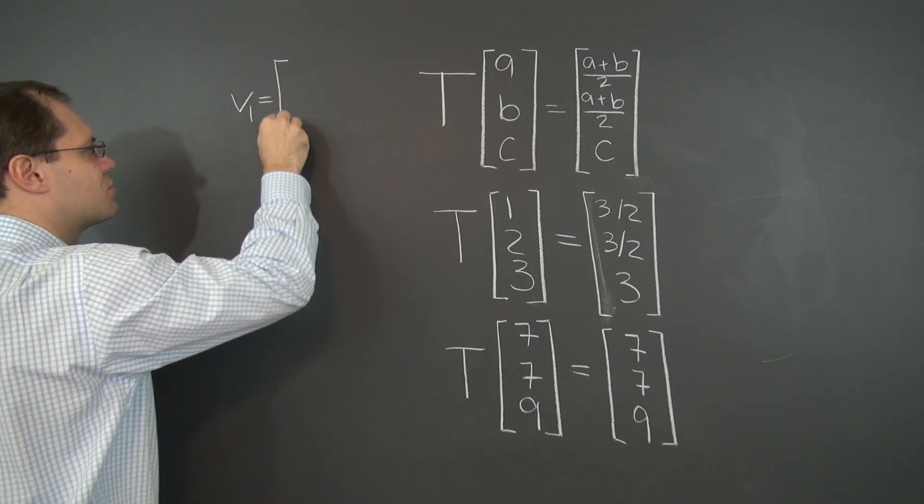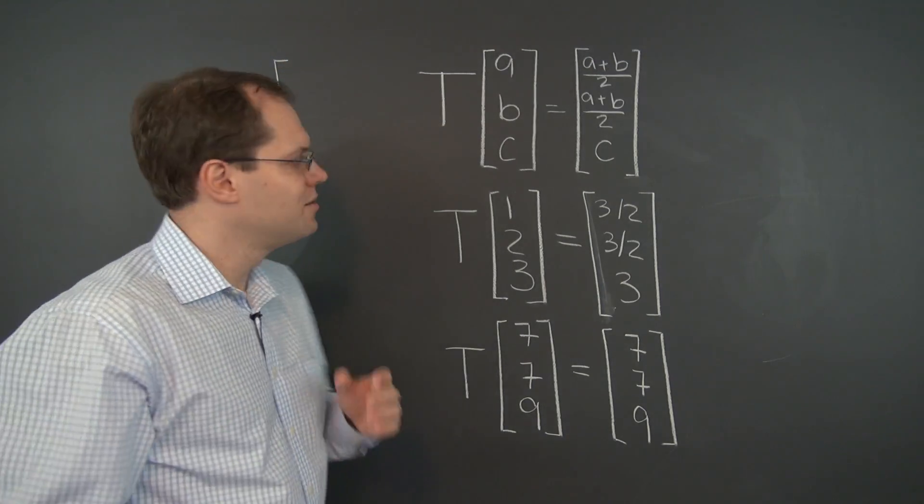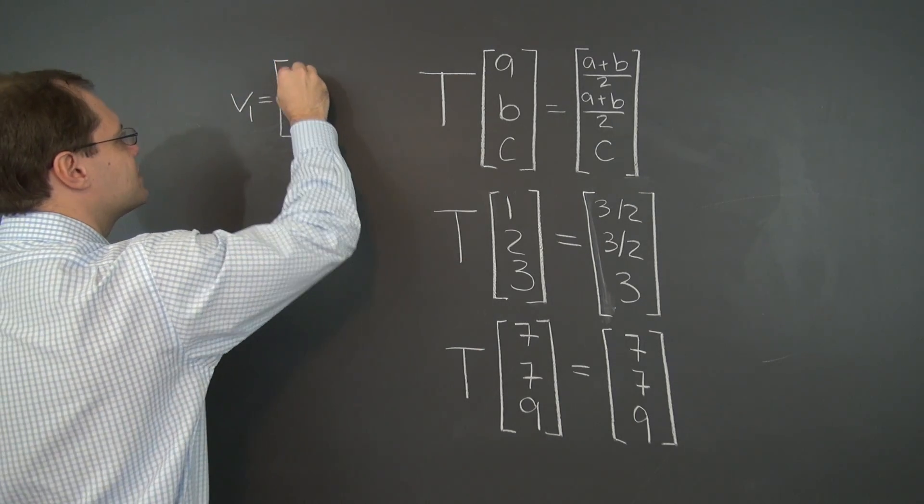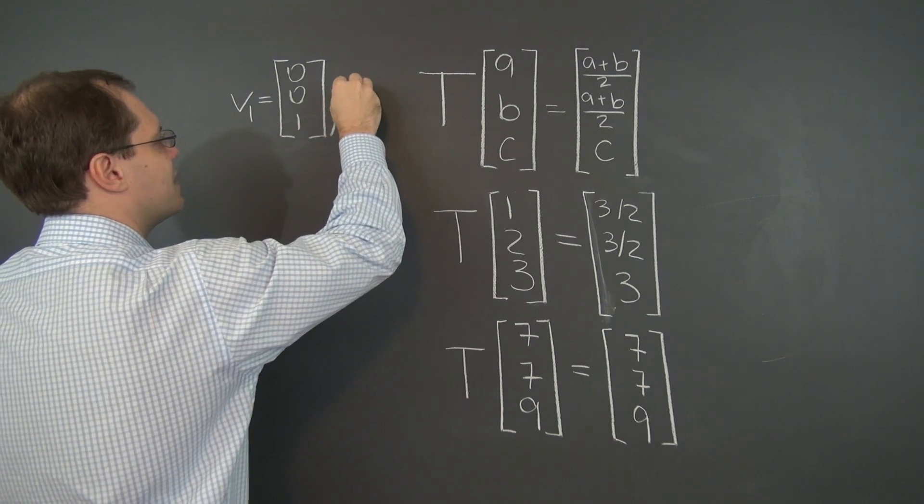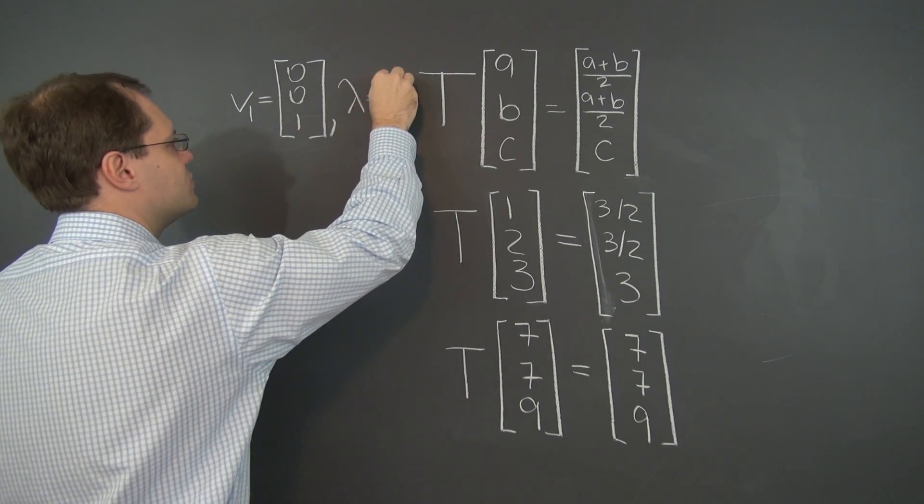So let's call that our first eigenvector. Not that we're throwing 7, 7, 9 away, it's legit, but let's pick this one for its simplicity.